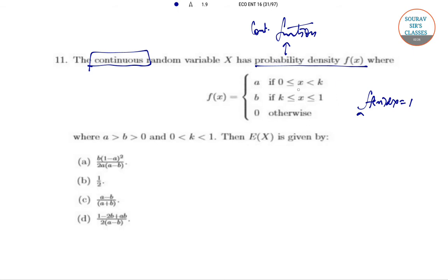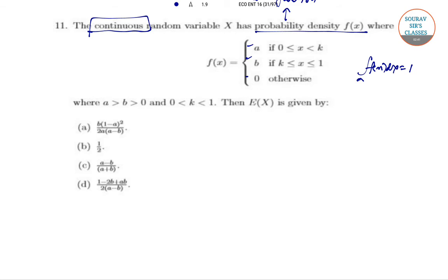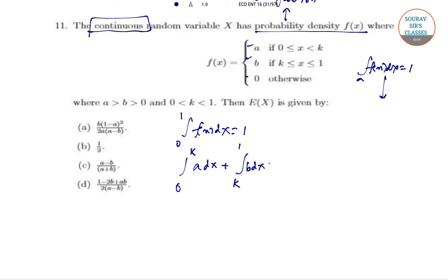The function is defined as 'a' where 0 < x < k, and 'b' where k ≤ x < 1, with k = 1 giving the boundary, and 0 otherwise, where a > 0, b > 0, and 0 < k < 1. Using the condition that the total integral equals 1, we write: integral from 0 to k of a dx plus integral from k to 1 of b dx equals 1.